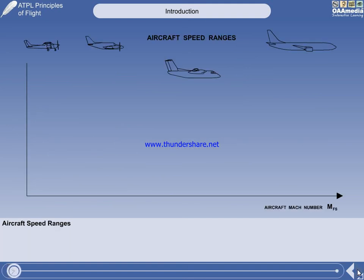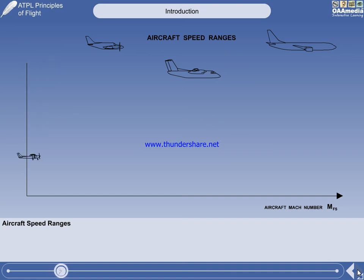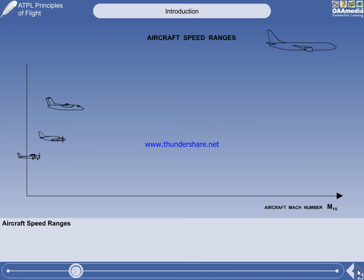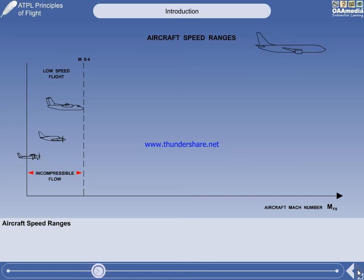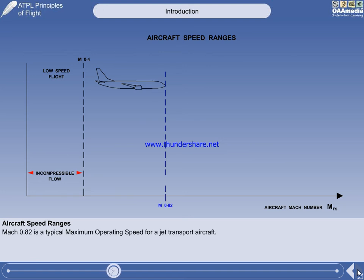Aircraft are classified in accordance with their maximum operating speed, which will be either subsonic, transonic, or supersonic. The illustration shows a table with aircraft Mach number increasing to the right. A training plane is fairly slow, a light twin is a little faster, and a turboprop commuter plane faster still. All these types of aircraft operate at speeds below about Mach 0.4, where incompressible flow is assumed — low-speed flight. Jet transport aircraft operate at the considerably higher speed of approximately Mach 0.82, inside the speed range where compressible flow must be considered — high-speed flight.